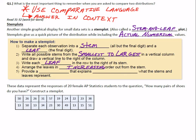Step 5—an important part of any graphical display you make—don't forget to provide a key that explains in context what the stems and leaves represent. These data represent the responses of 20 female AP statistics students to the question, how many pairs of shoes do you have? Construct a stem plot.